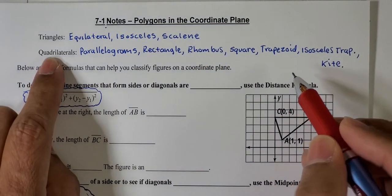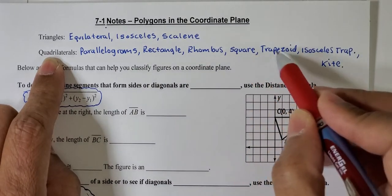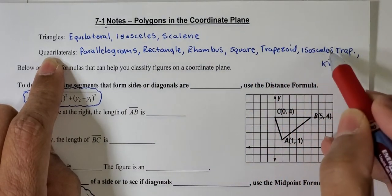When it comes to quadrilaterals, we have parallelograms, rectangles, rhombus, square, trapezoid, isosceles trapezoid, and kite.